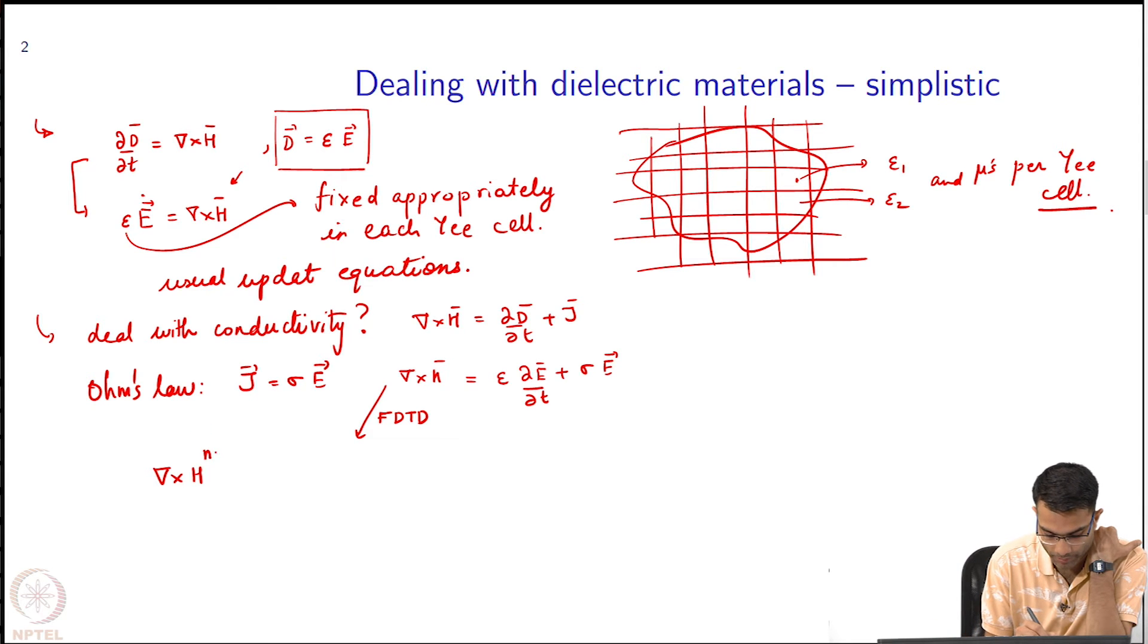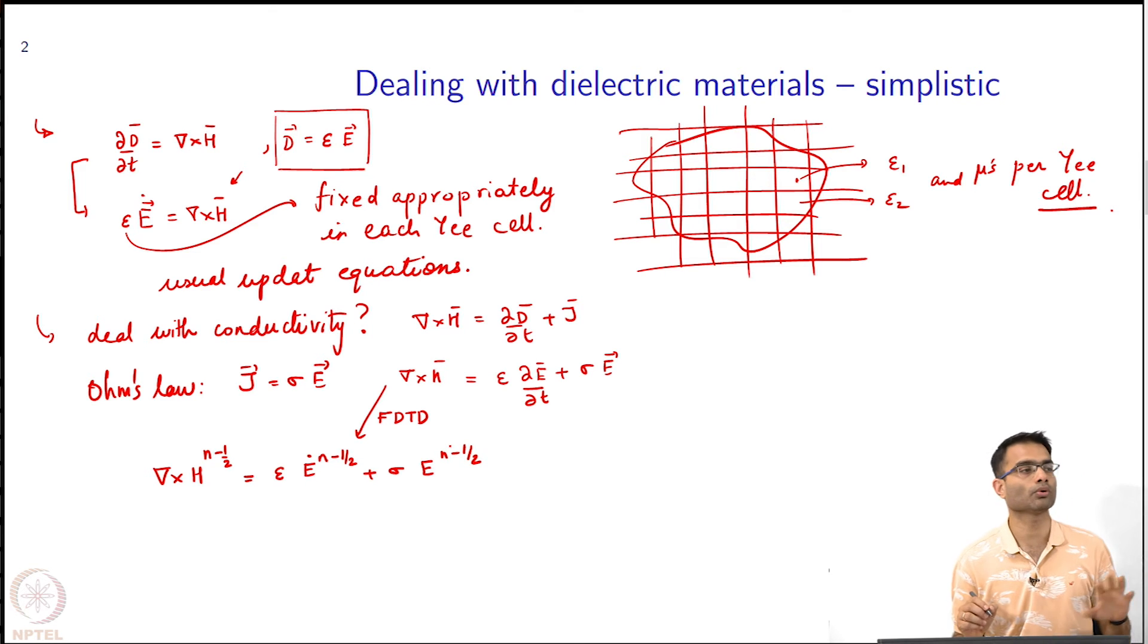For example, I will write n minus half over here, and epsilon e dot at n, n minus half the same time instant, plus sigma e n minus half. I have just written down the whole equation in discrete form. If the left hand side is at time n minus half, the right hand side should also be at time n minus half.